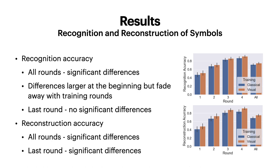We trained participants in four rounds of training. Overall, participants were able to recognize symbols trained using visual-based training significantly better than symbols trained using classical training. However, the larger difference seemed to appear in earlier rounds, whereas in the last round there were no significant differences, as the differences diminish with more rounds of training.